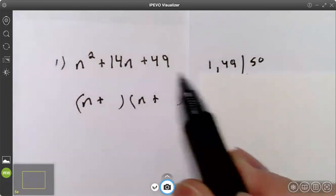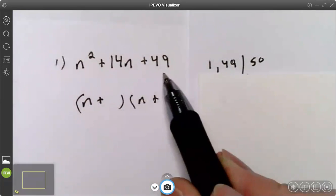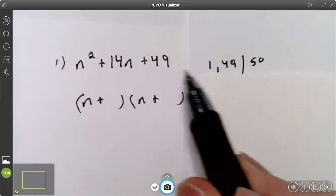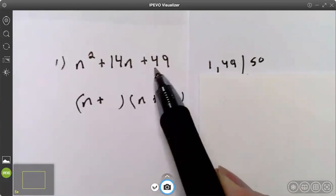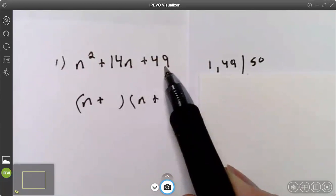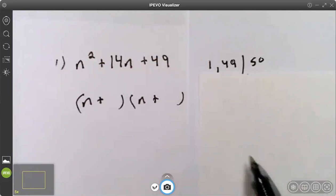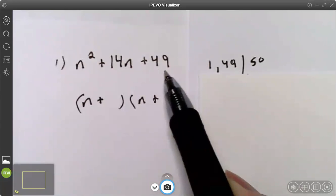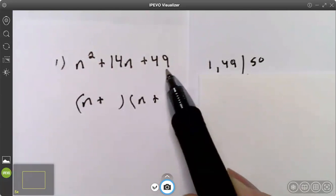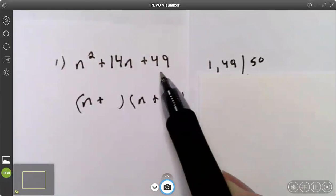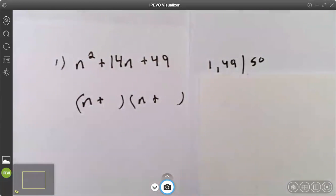One times 49 is 49, but one plus 49 is 50. Two won't go into 49 because it's not even. Three won't go into 49 because it won't go into the sum of the digits. Four plus nine is 13. Three won't go into 13, so I know three won't go into 49. Four won't go into 49, it's not even. Five won't go into 49, it doesn't end in five or zero. Six won't go into 49. Seven will go into 49.